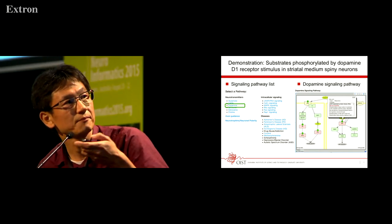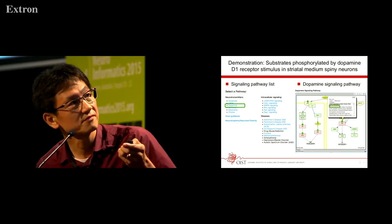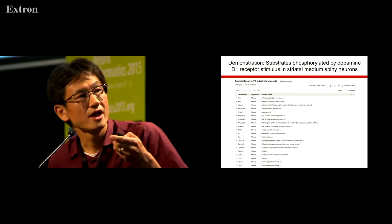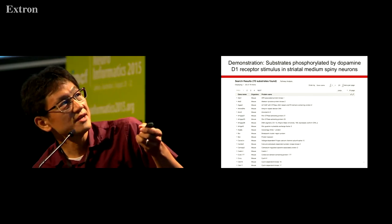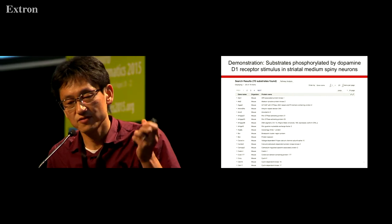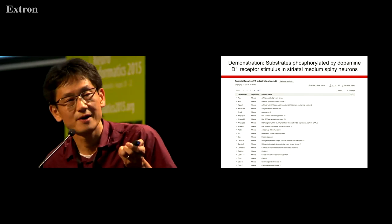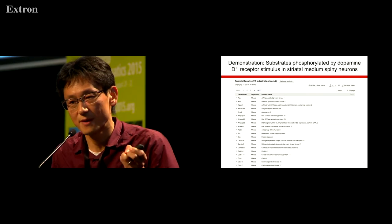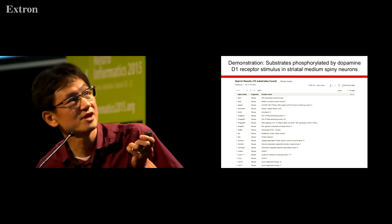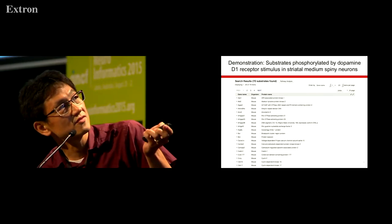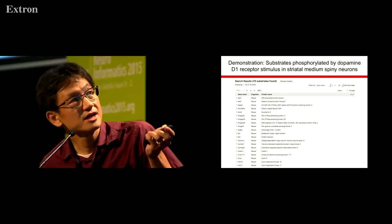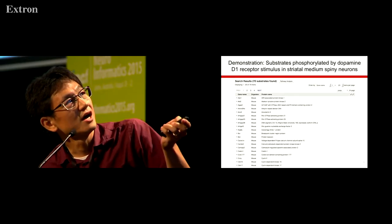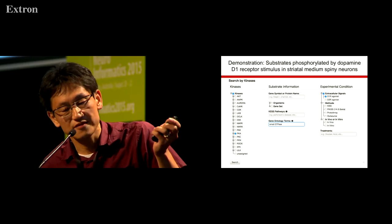By clicking this hyperlink, we can see all the list of substrates phosphorylated by PKA under the condition of dopamine D1 receptor stimulation. This is the complete list of substrates. We can see about seven substrates.